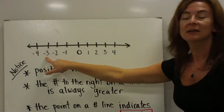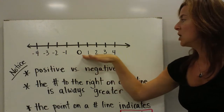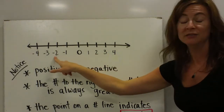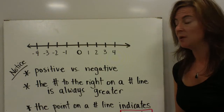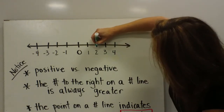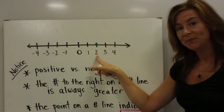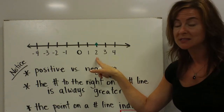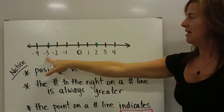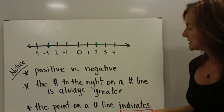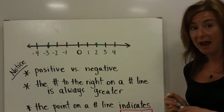Taking a look at another example: negative 2 is to the right of negative 3 on the number line. Since numbers get larger as we move to the right, I know that negative 2 is larger than negative 3. Also notice: if I put a point on the number line indicating 2, that point is 2 places away from 0. If I go over and indicate negative 3, negative 3 is 3 places away from 0.